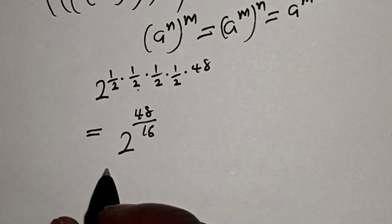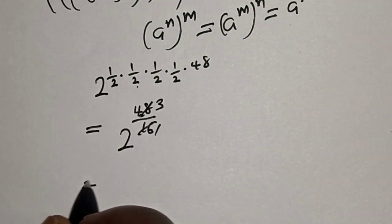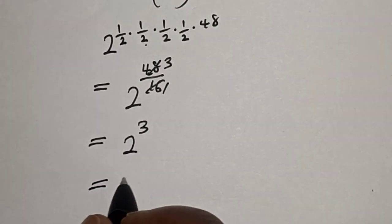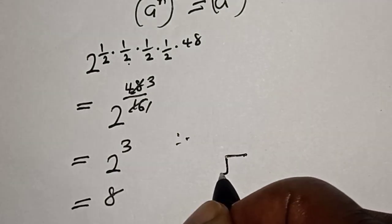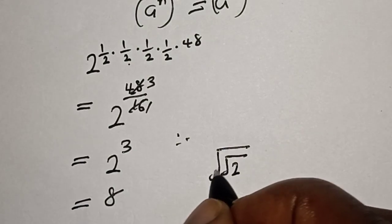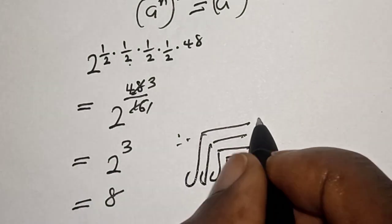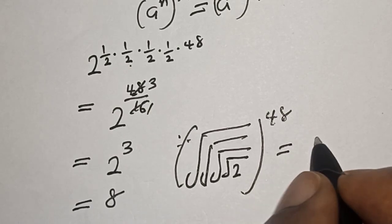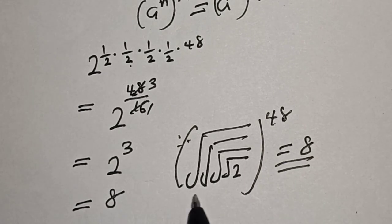Now let's divide: 48 over 16 equals 3. This is equal to 2 raised to the power of 3, and 2 raised to the power of 3 is equal to 8. Therefore, root of 2 with another root, another root, and another root, all raised to the power of 48 is equal to 8. That is our final answer. Before you leave, like, share, comment, and subscribe. Thank you, bye bye.